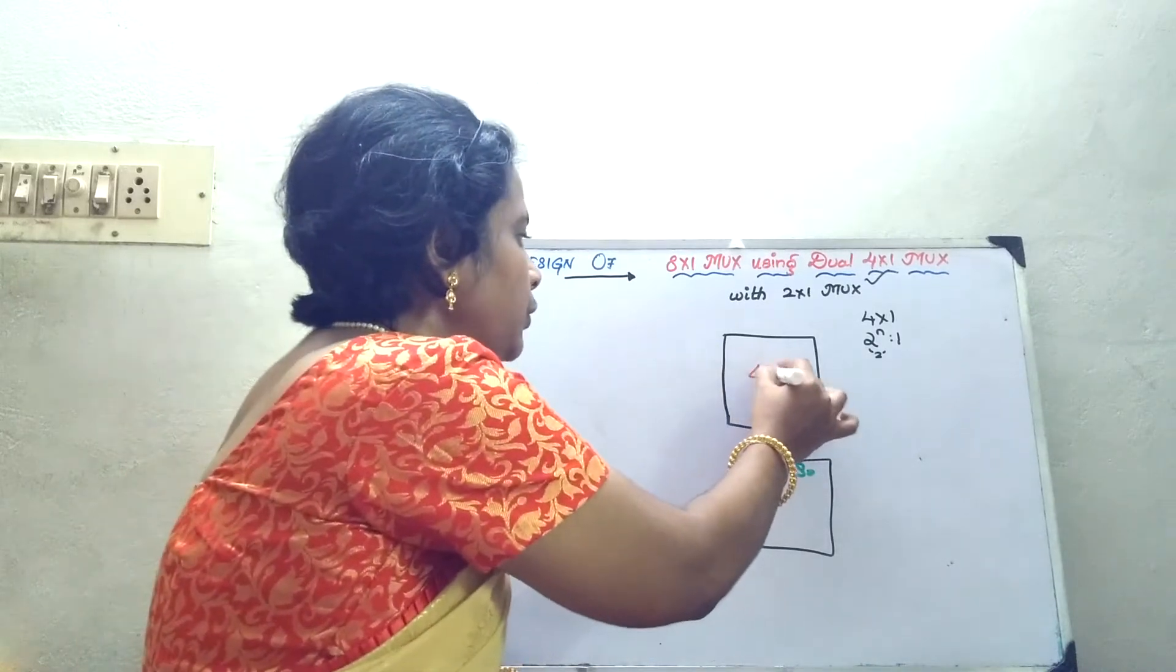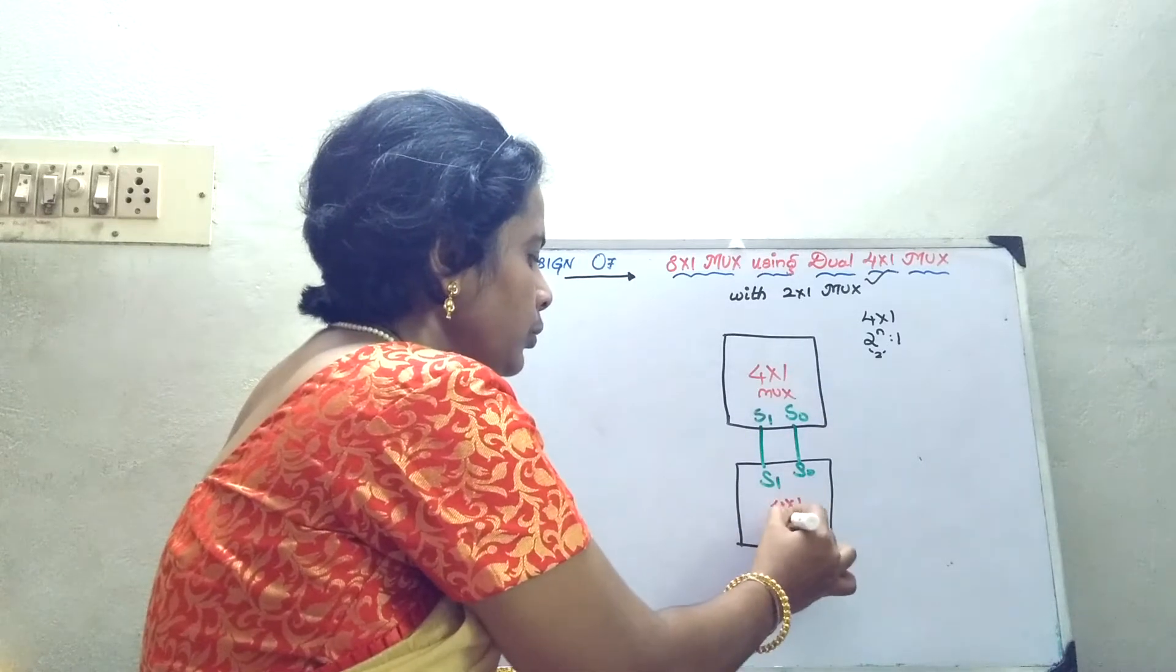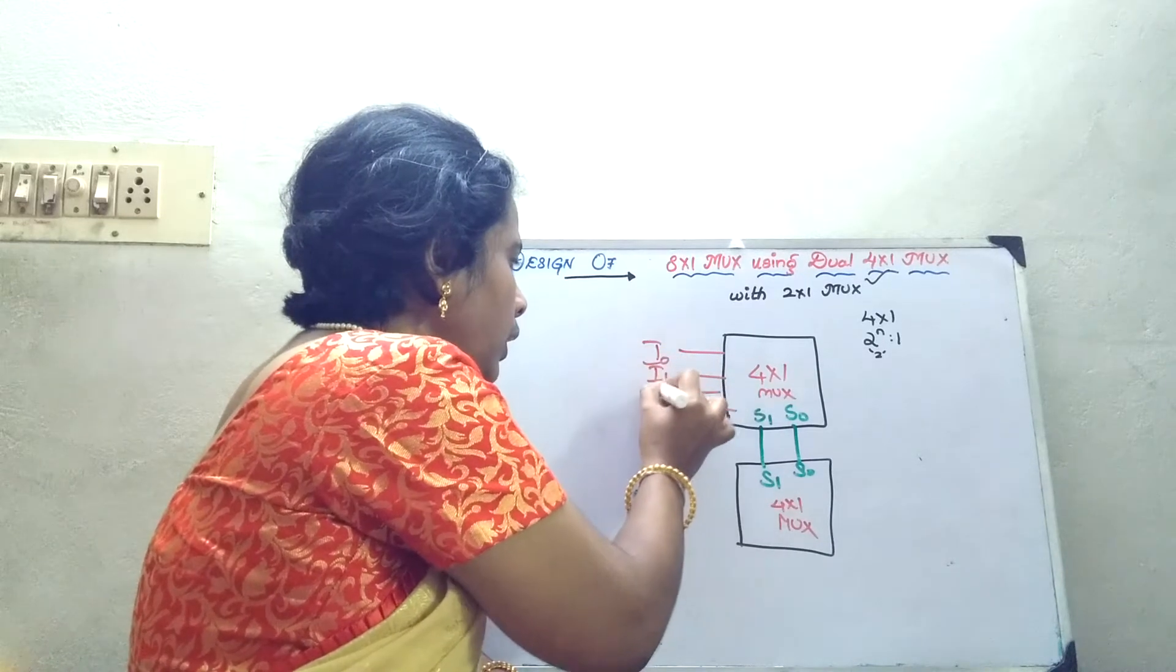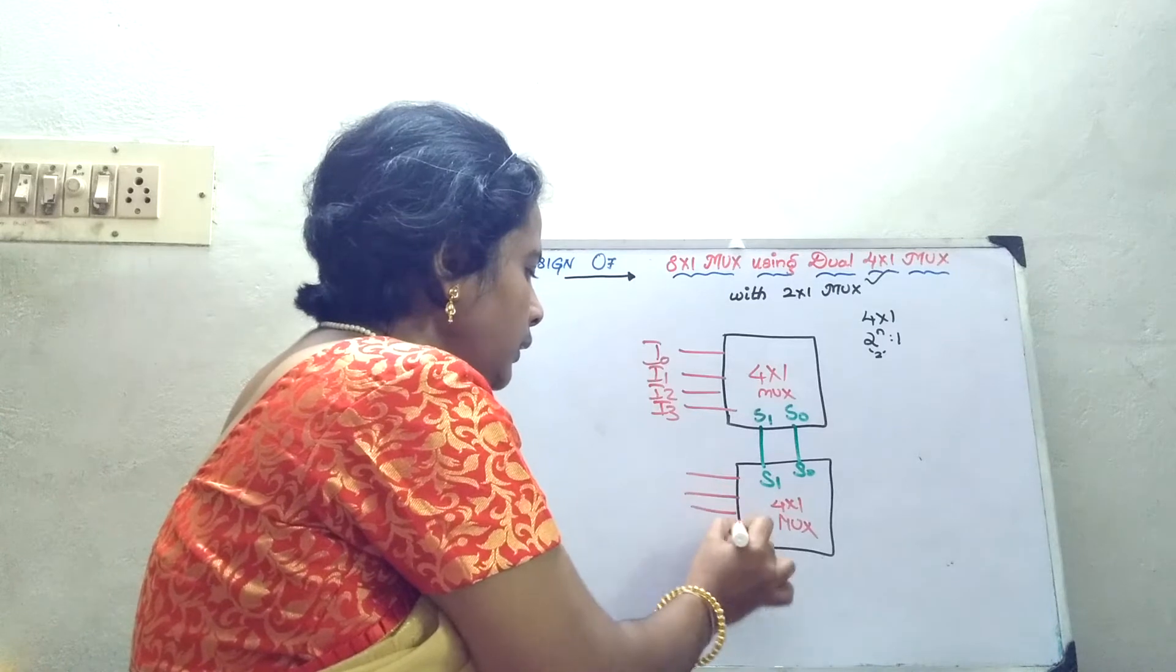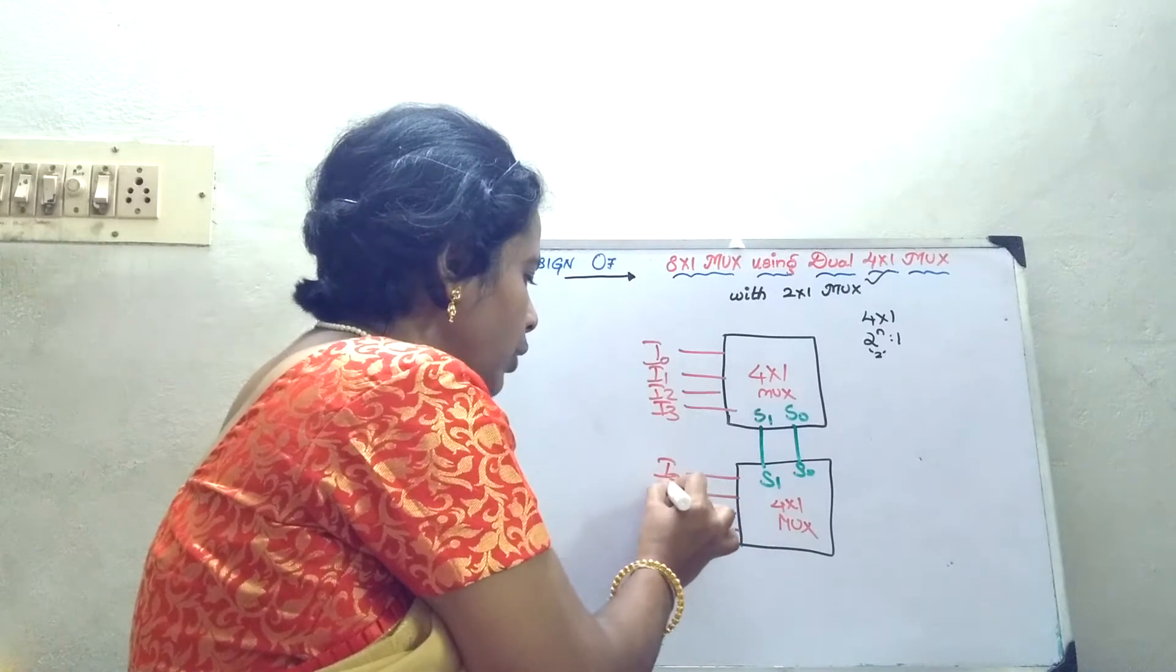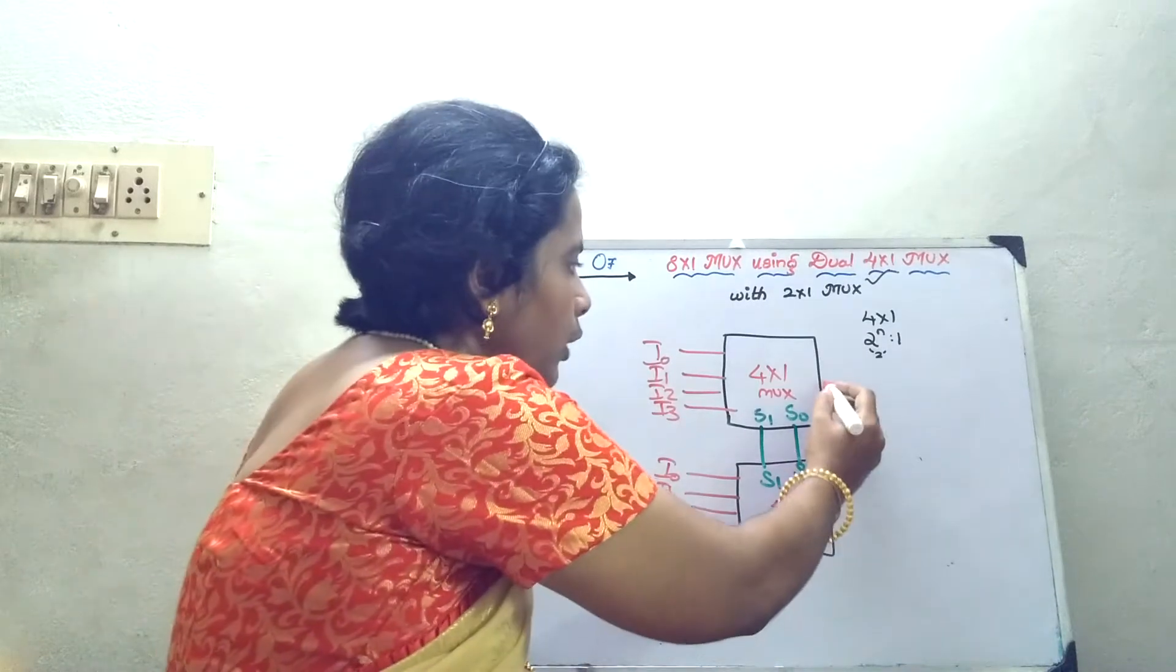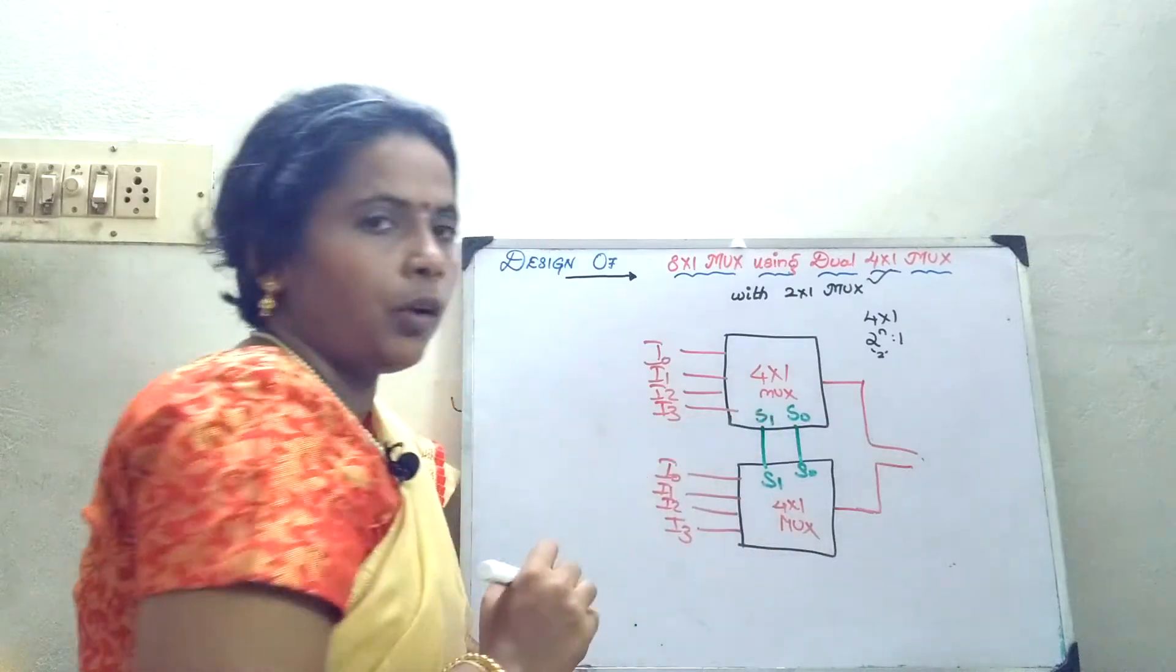What is your mux? It is 4 cross 1 mux. Your input is I naught, I1, I2, I3. Similarly, for the next mux, you have the values from I naught to I3. And you will have your output.